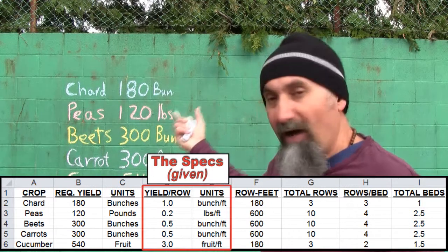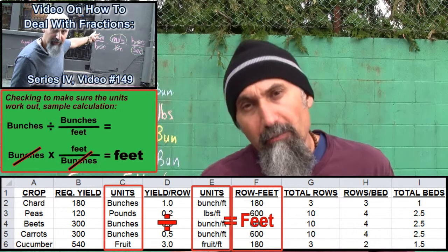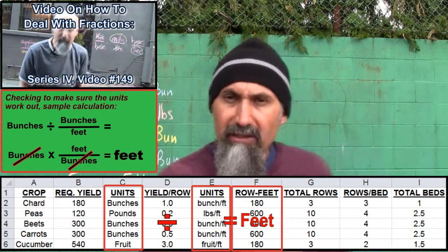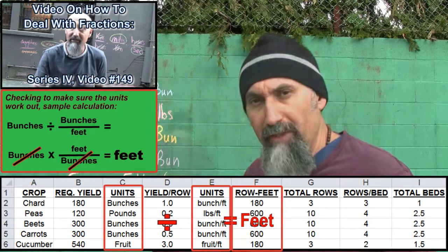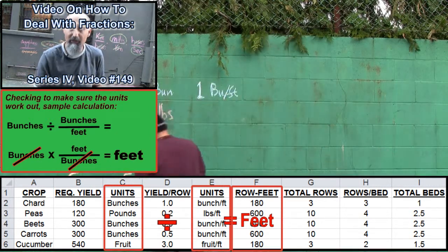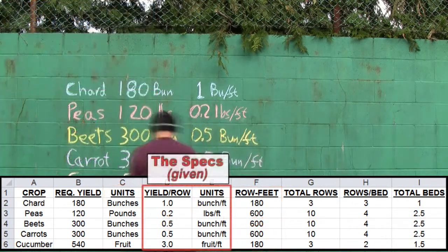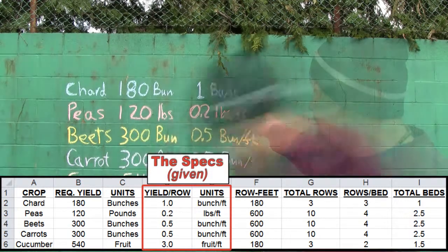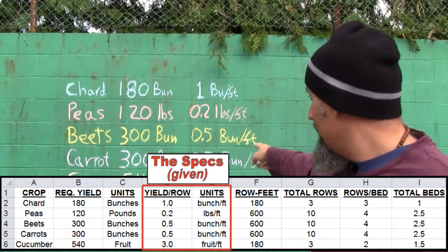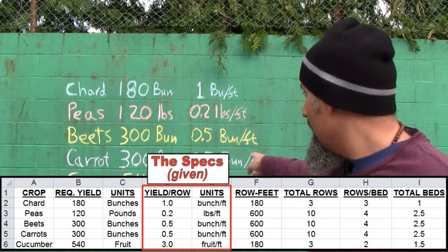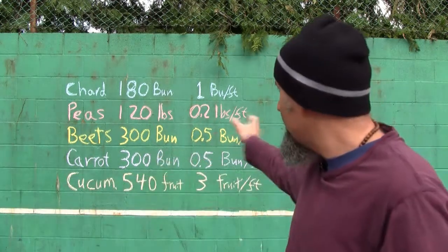We divide the total yield that we're looking for by the expected yield per foot, and that's going to give us the total row feet we need to provide for our menu. Our expected yield per crop is: one bunch of chard per foot, 0.2 pounds of peas per foot, 0.5 bunches of beets per foot, 0.5 bunches of carrots per foot, and three fruit per foot for cucumbers.